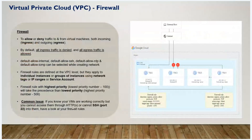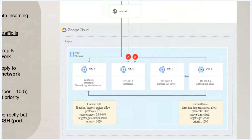With a firewall rule, you can view the instance in the browser. With the default allow SSH rule, you can enter a Linux Virtual Machine. With the default allow RDP rule, you can enter a Windows Virtual Machine. The firewall rule controls what access is permitted to the virtual machines.